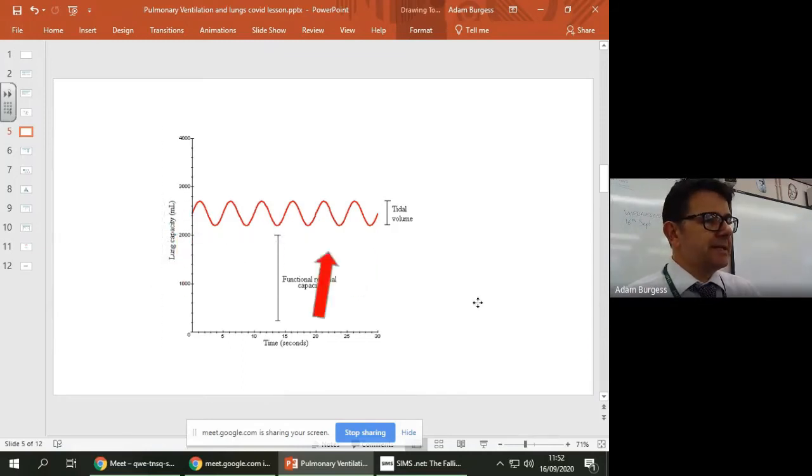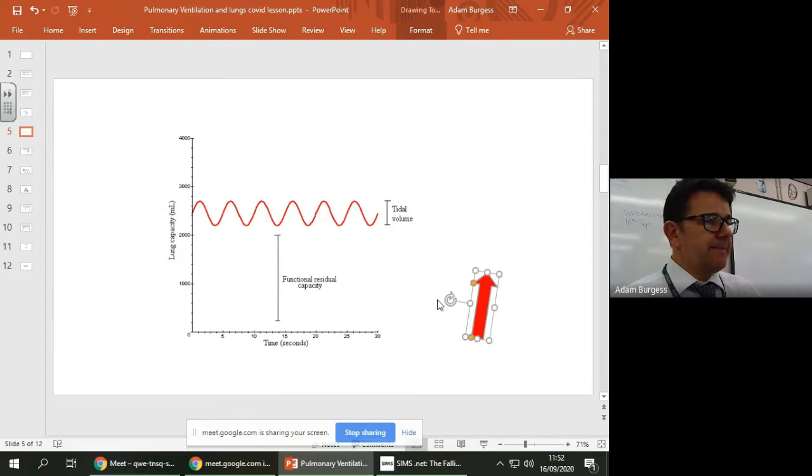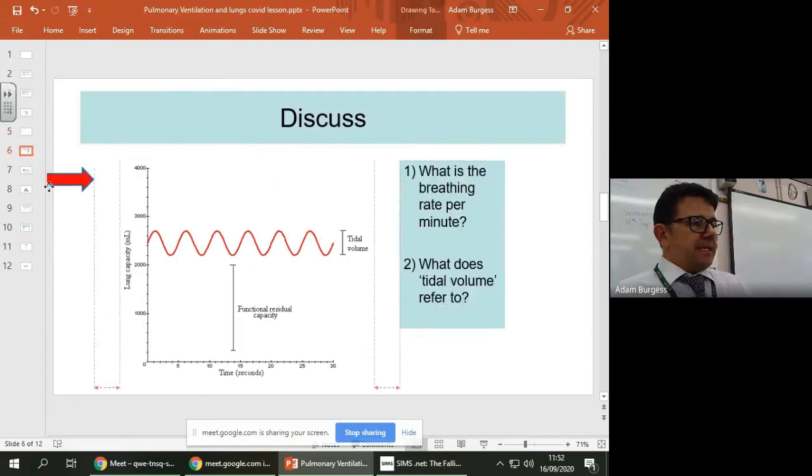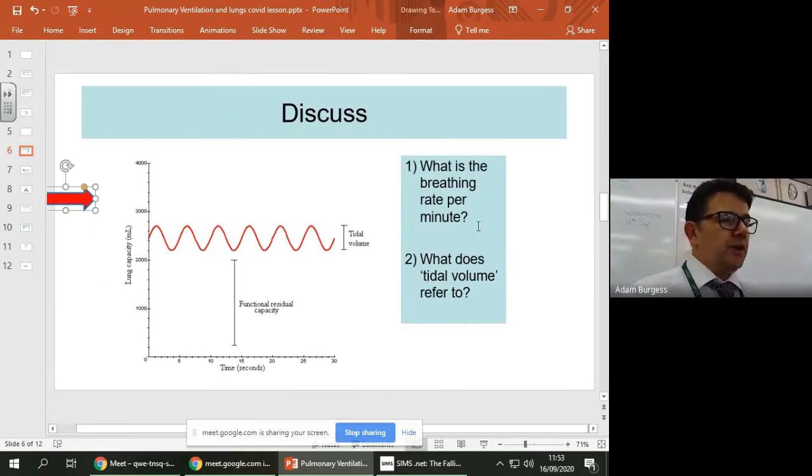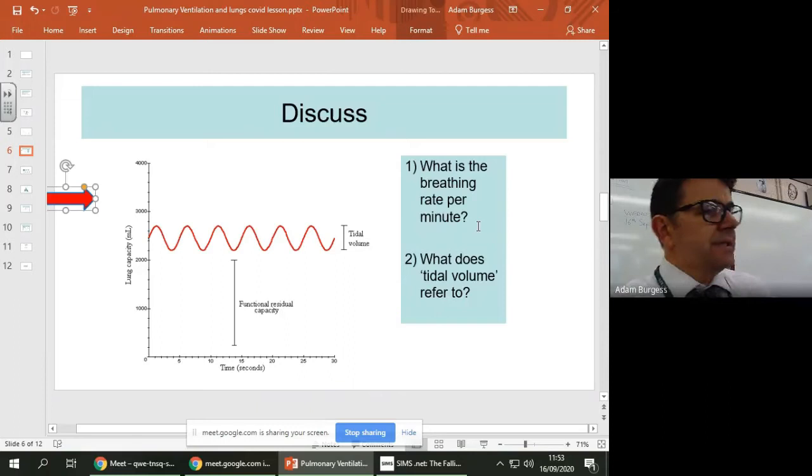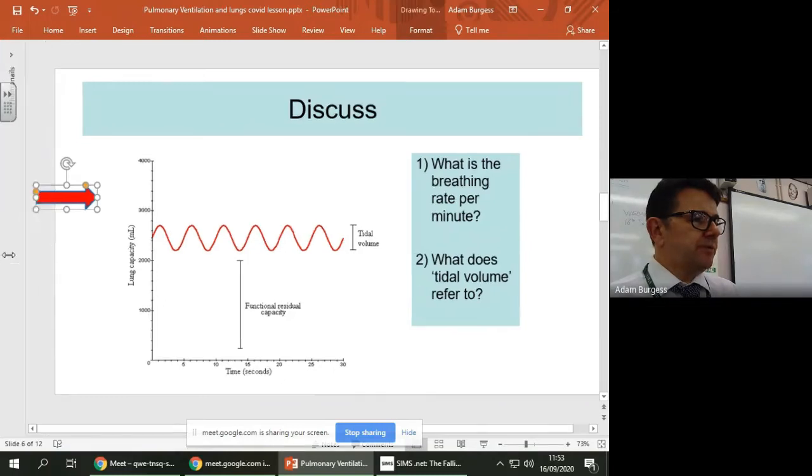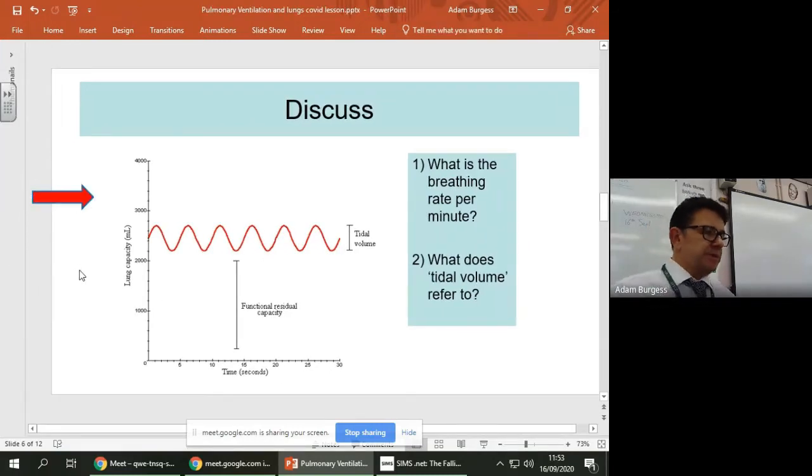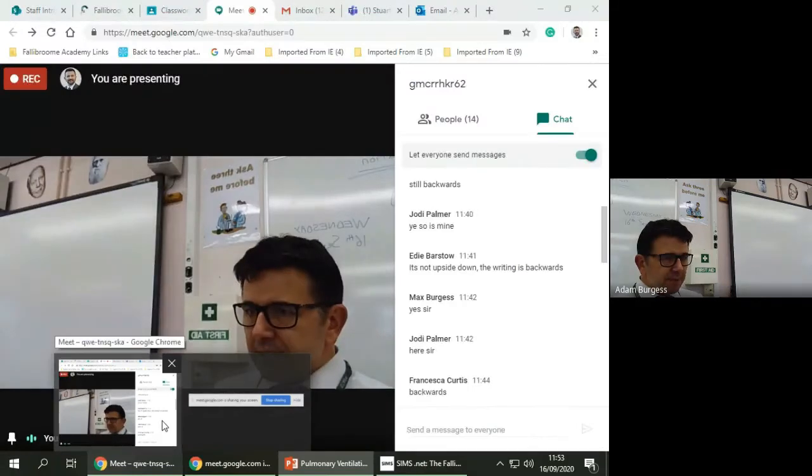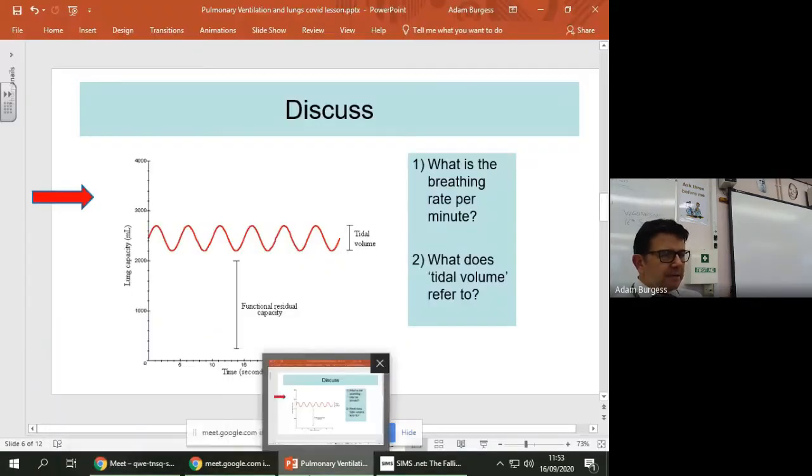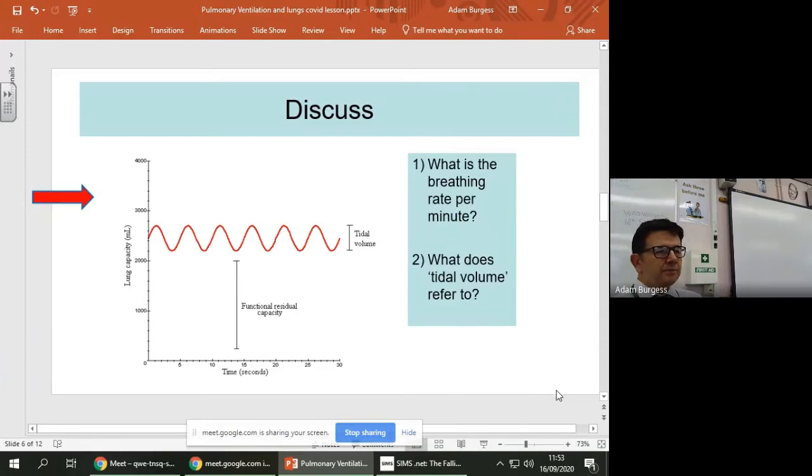So there we go, so you can work out the lung capacity in millimeters there. Right, so here is a question for you. Okay, so I'd like you to write down your answer. So what is the breathing rate per minute from this diagram and what does tidal volume refer to? So I'm just going to give you a moment to do that. When you're done can you just, well you're saying anything in the chat at the moment, no, okay, so I'll just give you a minute or two to do that.